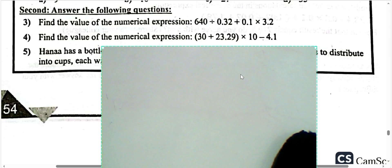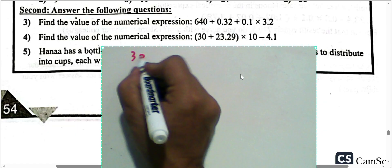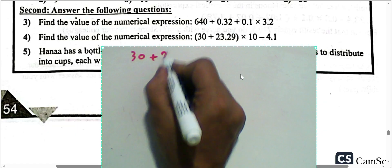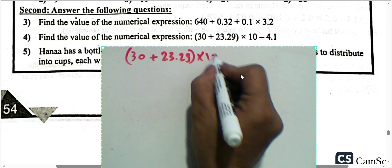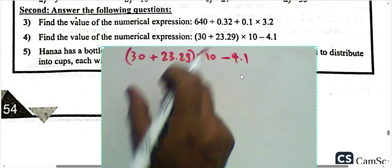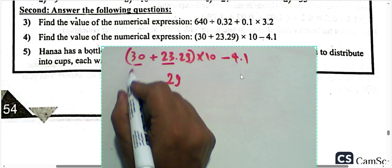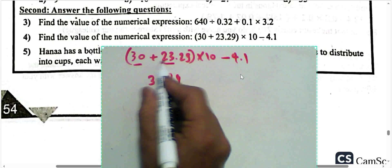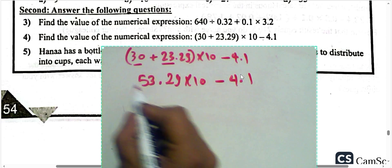Next: find the value of the numerical expression. We have 30 plus 8 and 23 and 29 hundredths, all multiplied by 10, subtract 4.1. First step — parentheses: 29 hundredths and 23 plus 30. Zero plus zero equals 0, 2 plus 3 equals 5, so the result is 53 and 29 hundredths, all multiplied by 10, subtract 4.1.